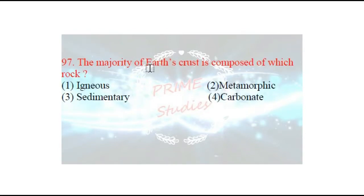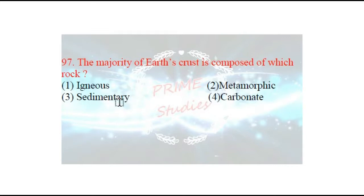Next question: the majority of earth's crust is composed of which rock? Earth ki crust sabse zyada kaun se material ki bani hui hai? The options are: igneous, metamorphic, sedimentary, or carbonate. The answer is igneous — aapki jo earth ki crust hai, woh sabse zyada igneous rock se bani hui hai.